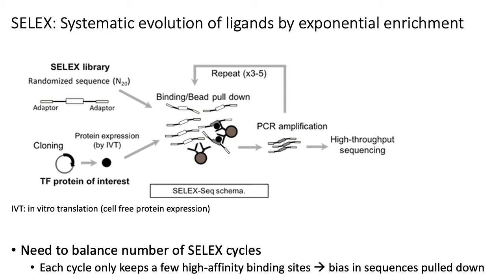So you end up with a biased set of oligos at the end of SELEX if you use too many cycles. There is some fine art in determining exactly how many cycles you should use for your experiment.